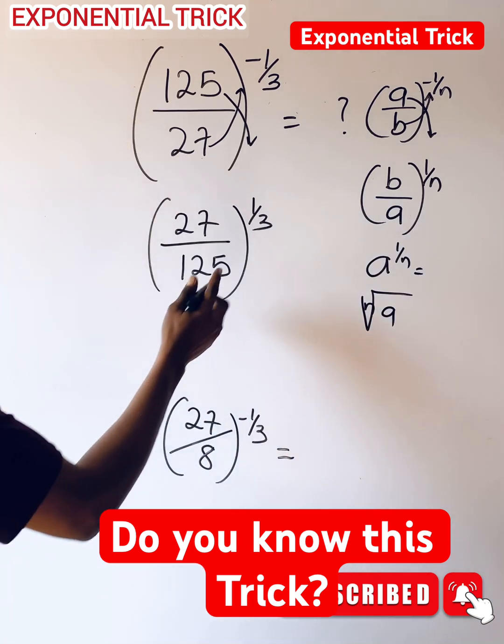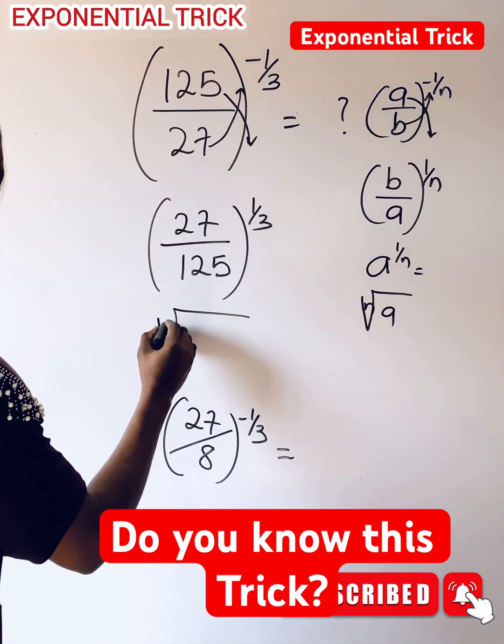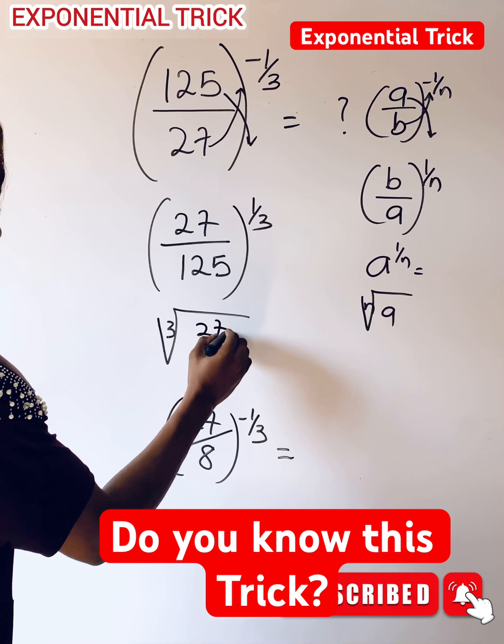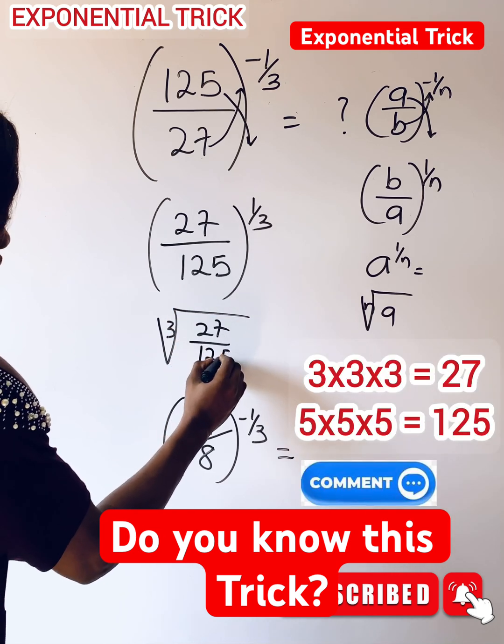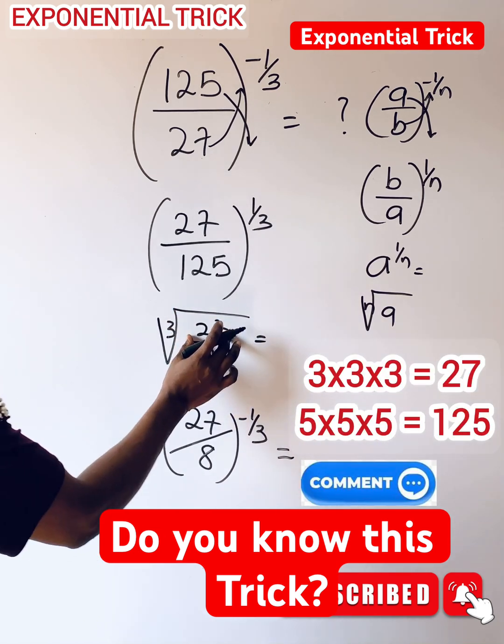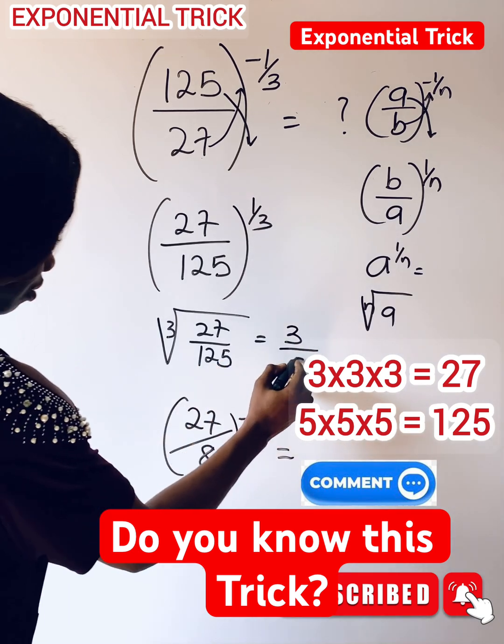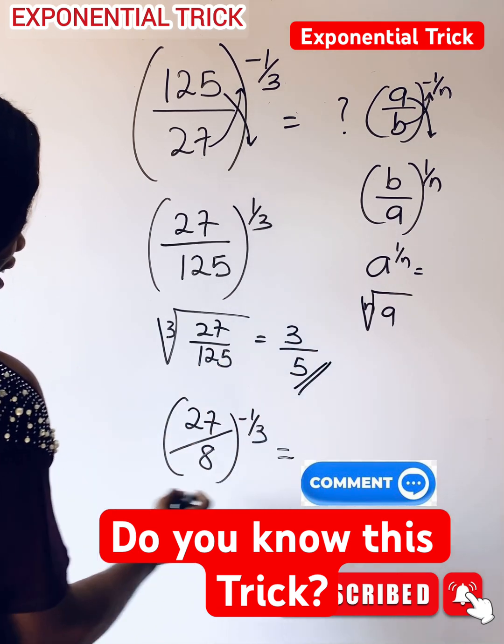So we're going to use three to form this, so it will be cube root of 27 over 125. And cube root of 27 is 3, cube root of this is 5, and this is your answer.